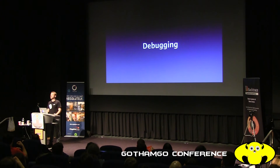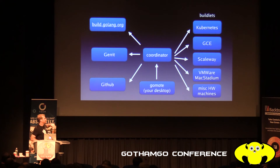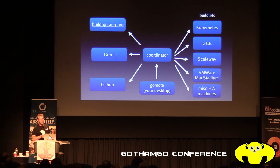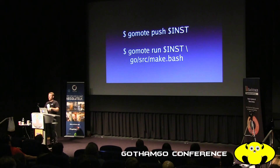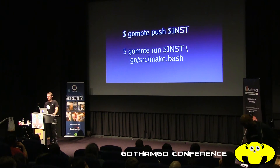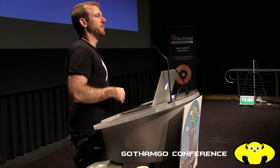Sometimes you run the trybots and it says everything passes except DragonFly BSD, and you think 'what is DragonFly BSD and I don't have one.' So we have this tool called go-moat. It runs on your machine, connects to the coordinator, and either creates or gives you a connection to a machine with a standard build interface. You can say 'give me an OS X 10.11' or 'give me a Windows,' then use go-moat push to sync your local Go root file system to it and run commands that stream stdout, stderr, and exit code back.